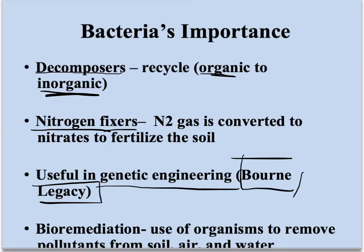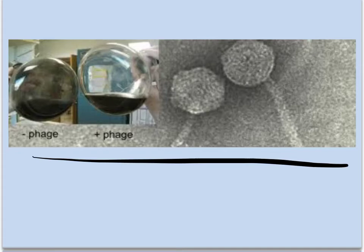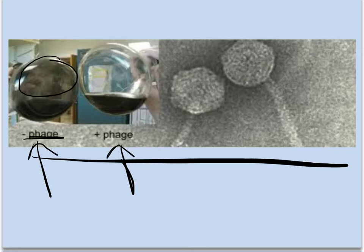Lastly, bioremediation — this is the use of organisms to remove pollutants from air, soil, and water. The big oil spill a couple of years ago: several places used bacteria to eat through that oil and help clean it up a little faster. Here's an example of bioremediation — this is with a virus but it's the same general idea. Do you see all the black gunk built up on this flask? When they added the virus, it ate through all that black gunk and now it's clean.